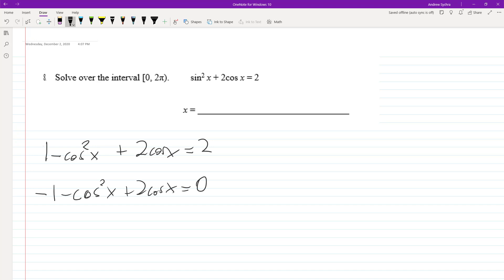Well, I'm going to multiply by negative 1, so we end up with cosine, and I'm going to do it in decreasing powers, cosine squared x minus 2 cosine x plus 1.